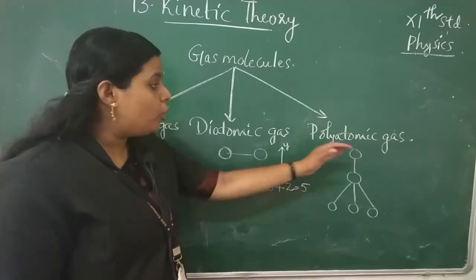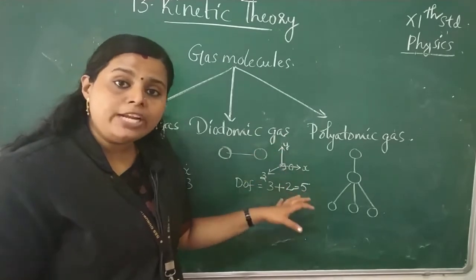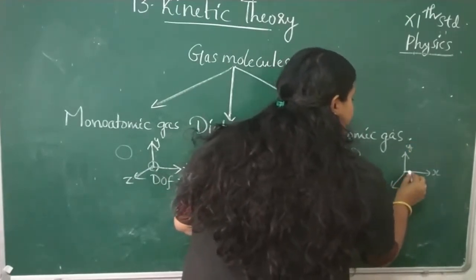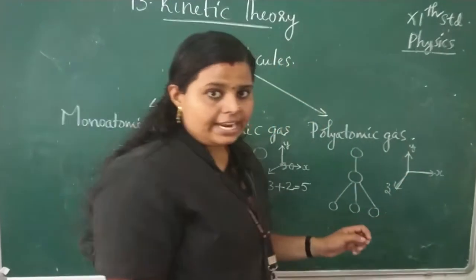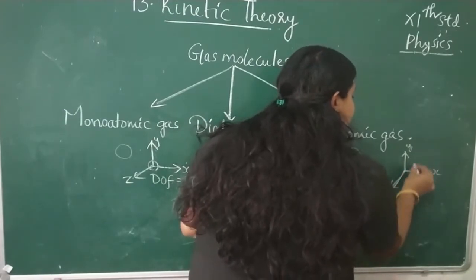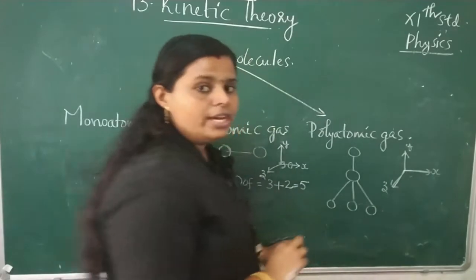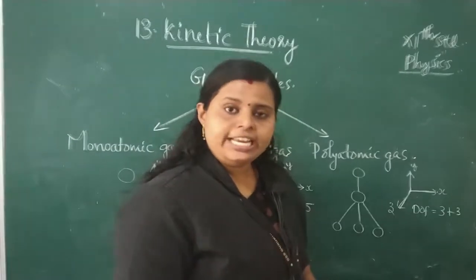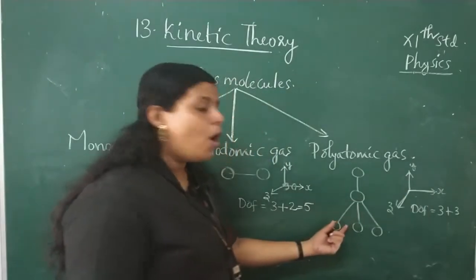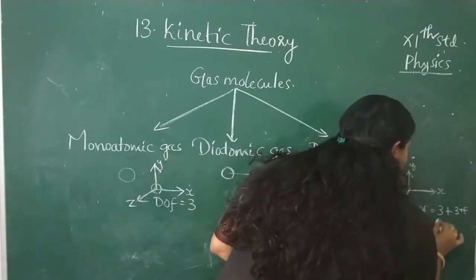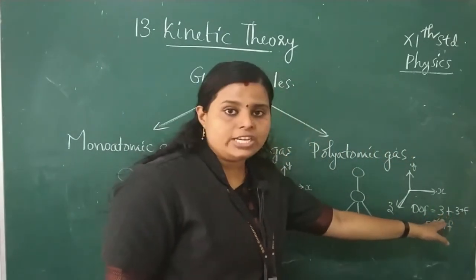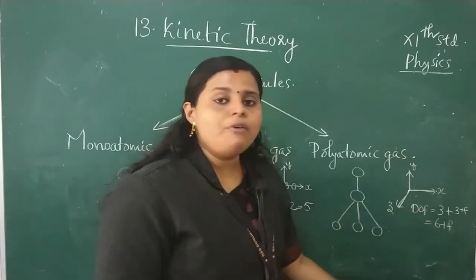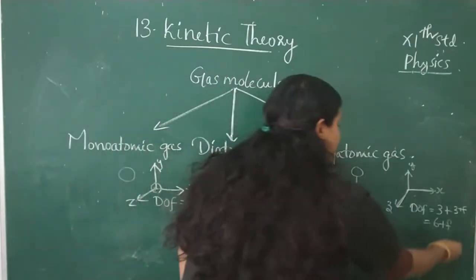For a polyatomic gas or polyatomic molecule, the molecule is independent in the X, Y, and Z directions giving 3 translational degrees of freedom, and can rotate about X, Y, and Z axes giving 3 rotational degrees of freedom. If the bond is not rigid, F number of vibrations are possible, giving F vibrational degrees of freedom. So the total is 3 translational + 3 rotational + F vibrational = 6 + F degrees of freedom.